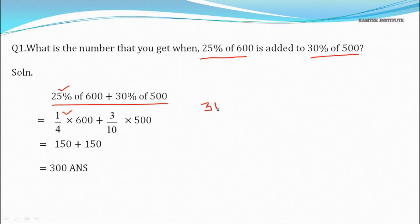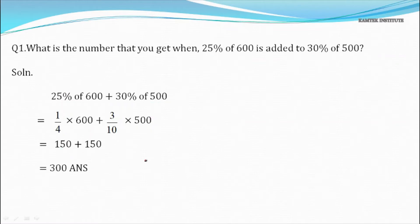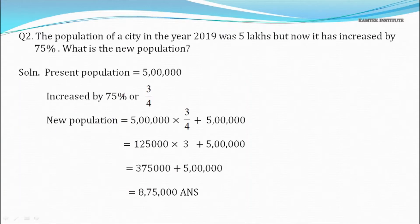30% equals 30/100, which simplifies to 3/10. So we have 3/10 × 500. For the first part, 4 and 600 cancel to give 150. For the second part, the zeros cancel and 3 × 50 = 150. So 150 + 150 = 300 is the answer.